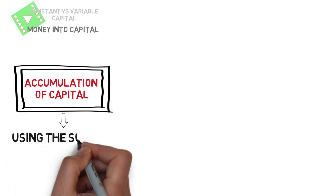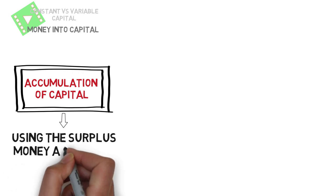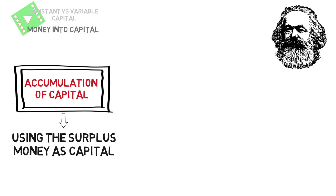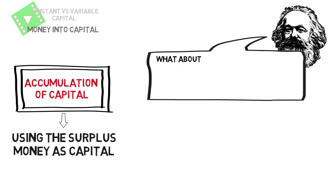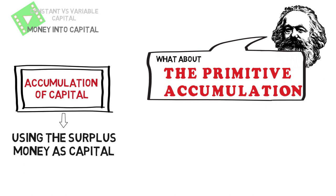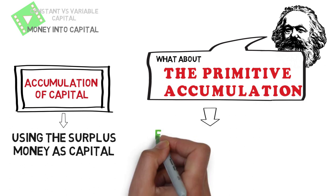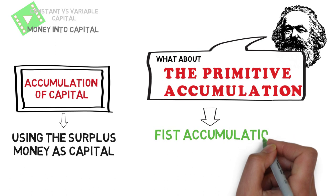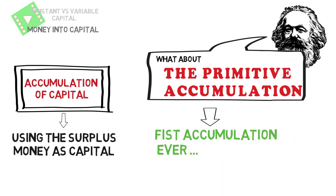That is using the surplus money as capital — or put it simply, when you invest your profit back into your business for more profit. But Marx was interested in what's called the primitive accumulation, or that is the mechanism of the first accumulation ever. How was it done and at what cost?